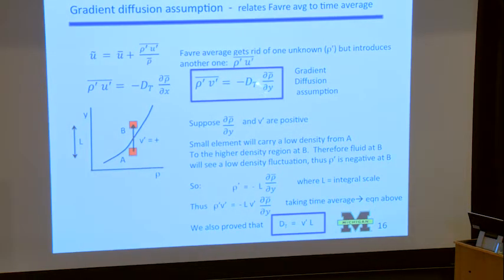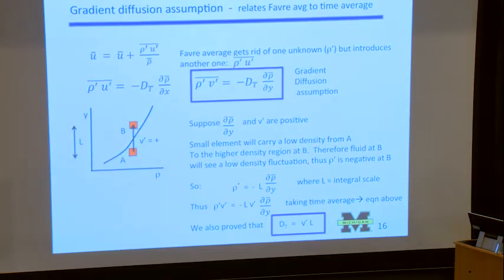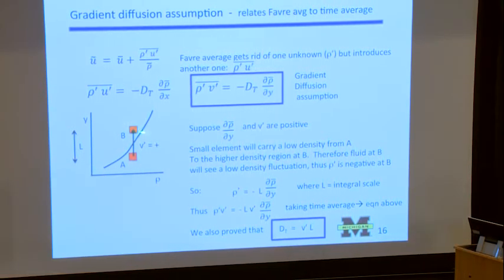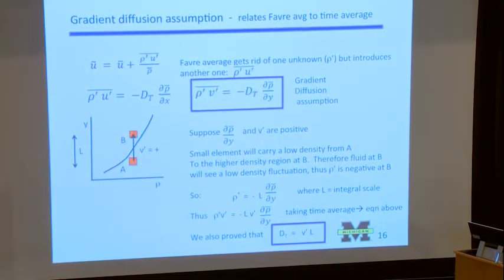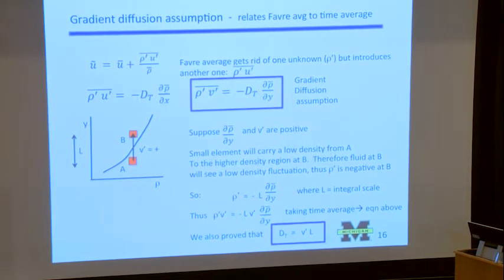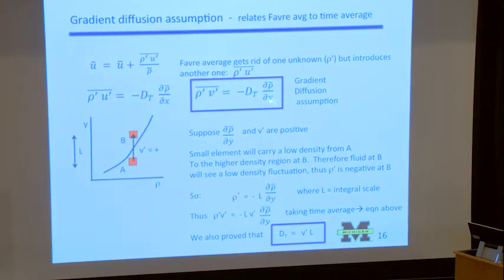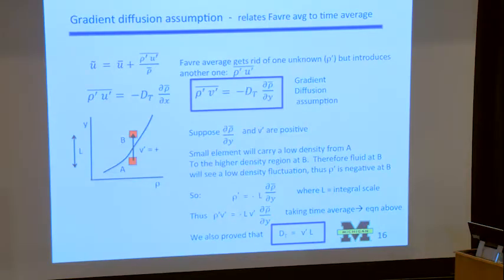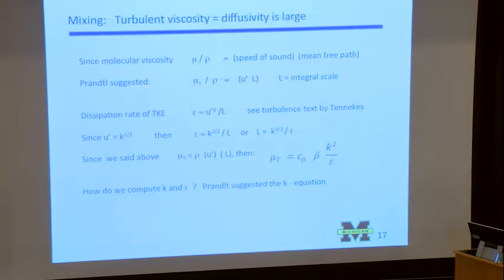If you know what this dt is and you know the d rho bar dy, you know what this flux is, and you can solve your conservation equations. Now, I think in my handout some of these symbols didn't turn out right. But these are Greek symbols.